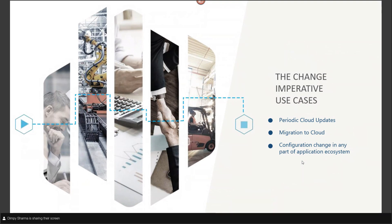The third use case is configuration change in any part of the application ecosystem. When we talk about Oracle Cloud as a silo application, there are multiple configuration changes happening and we could be covering those as part of our tests. But most often than not, we miss out on the end-to-end applications connected to it — whether different packaged applications, custom applications, utilities, Excel files, APIs, or databases. We need to incorporate those configuration changes as part of our analytics to analyze what's happening end-to-end at one particular time.